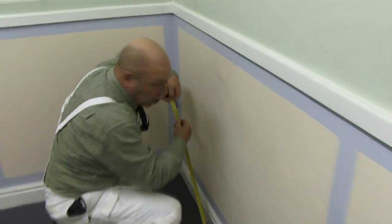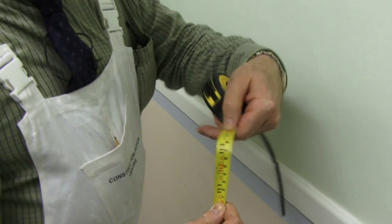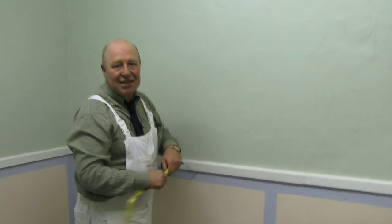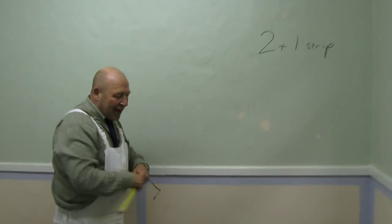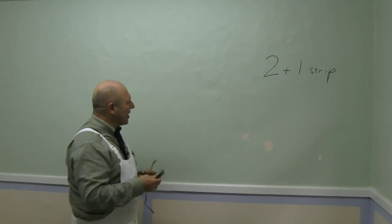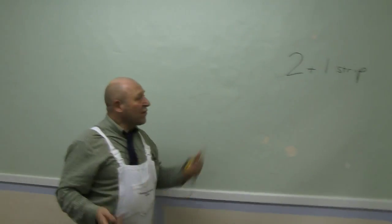So we know now that we need two strips at 290 centimeters. Now personally, I would like to add 10 centimeters at each side of this.